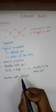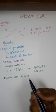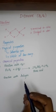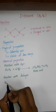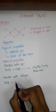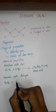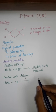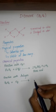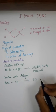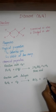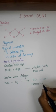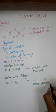Next, reaction with halogen. The halogens are fluorine, chlorine, bromine, and iodine. When Diborane reacts with a halogen, it will give boron trichloride and hydrochloric acid. Balance this equation.